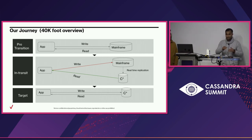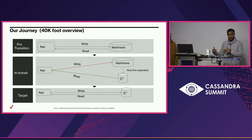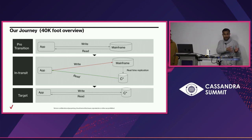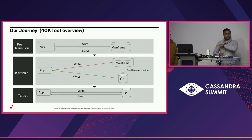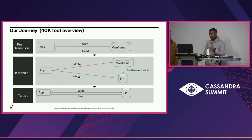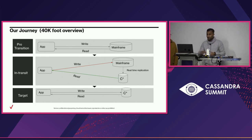In an RDBMS world, 1,000 tables interact in certain ways. In the Cassandra world, we had to mimic the exact same thing — how do we replicate that data? That was one of the biggest challenges, because we were not changing any of our interface or API side. Our final target landscape was to get rid of the mainframe and write directly to Cassandra.